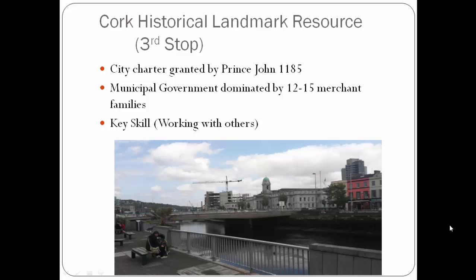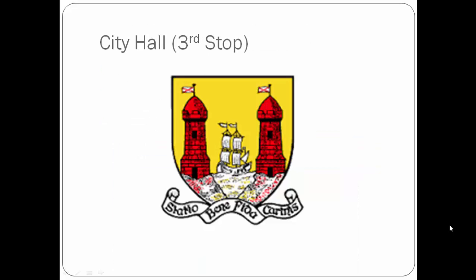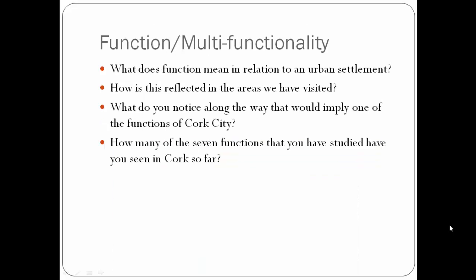Students will also be given a copy of the City Crest and tasked with translating what the motto means. Before moving on, students will be given questions on function and multifunctionality: What does function mean in relation to an urban settlement? How is this reflected in the areas we have visited? What did you notice along the way that might imply one of these functions? How many of the seven functions you have studied have you seen in Cork so far? These questions are designed to assess prior learning and how well students can critically apply it in a real-world scenario.